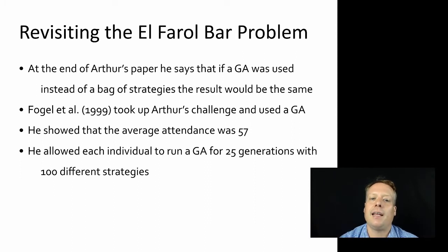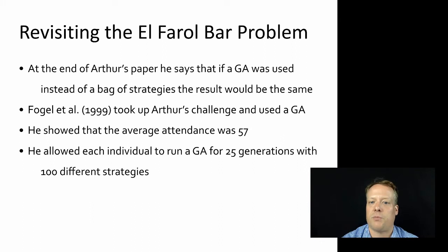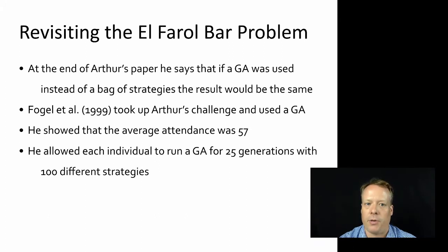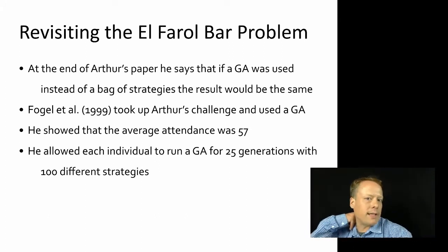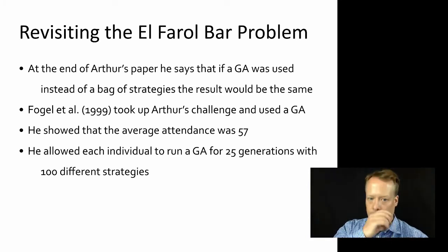One important aspect of this was that Fogel allowed each individual to run a genetic algorithm for 25 generations with 100 different strategies per generation. That represents a lot of computational power compared to Brian Arthur's original case, where agents simply had a bag of roughly five strategies.